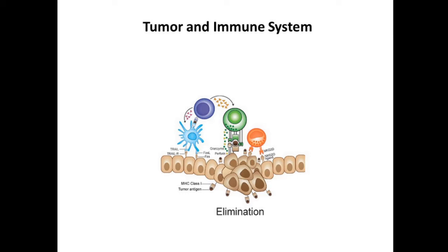These cells also start making abnormal proteins. These abnormal proteins are recognized by the immune cells, which in this figure have been depicted as blue, violet, green, and orange in color. The immune system is made up of several different types of cells, and all these cells, because of a difference in the genetic makeup of these abnormal cells, start recognizing and trying to eliminate these abnormal cells so that the body is protected from tumor.